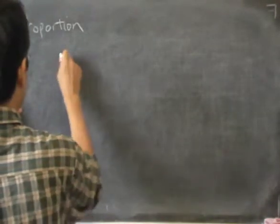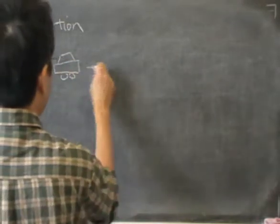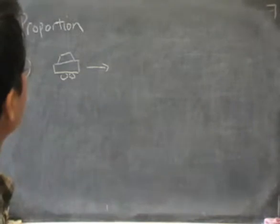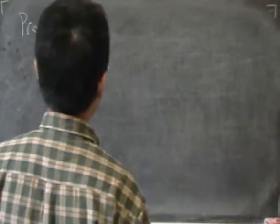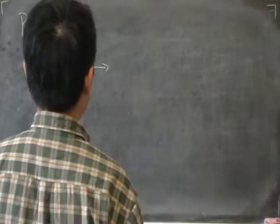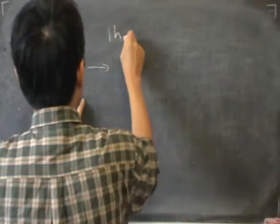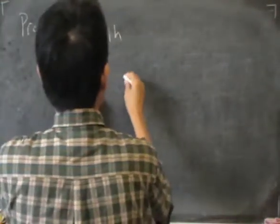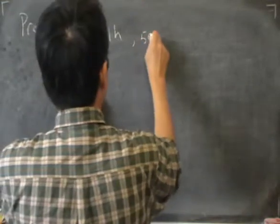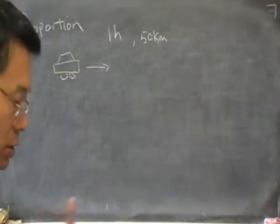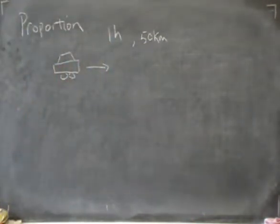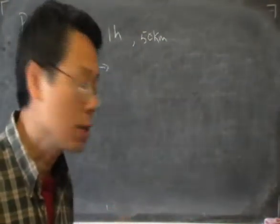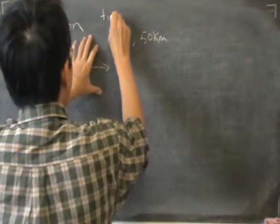Let's say I have a car and it's moving at a certain speed. Suppose that every hour it moves by 50 kilometers. So every hour the car travels 50 kilometers. By thinking about these two numbers, we are actually thinking of the idea of time and distance.